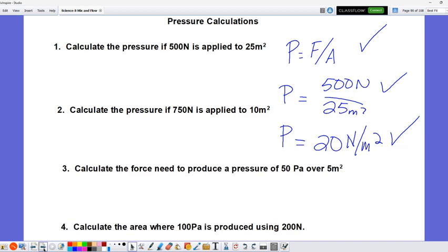We did some calculations with this. Calculate the pressure of 500 Newtons applied to 25 square meters. Pressure is force divided by area, so that'll be 500 divided by 25, and that's 20 Newtons per meter squared, or 20 Pascals.